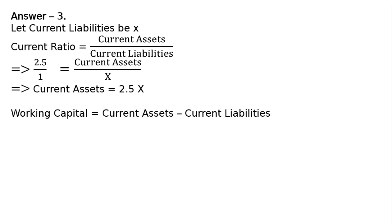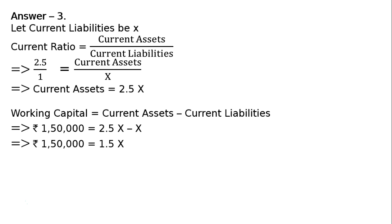The next part is working capital. Working capital is equal to current assets minus current liabilities. So, Rs. 1,50,000 is equal to 2.5X minus X, which gives us 1.5X equal to Rs. 1,50,000. Therefore, X is equal to Rs. 1,00,000.